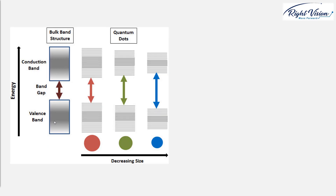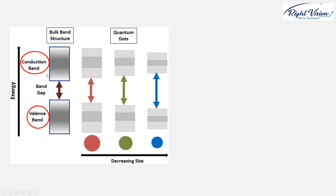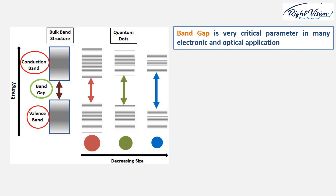As this figure shows, in bulk semiconductor structures two important bands are the valence band and the conduction band. The conduction band is the lowest energy band that is empty, and there is a gap between these two called the band gap. The band gap is a very critical parameter in many electronic and optical applications, and there is tons of research to tune the band gap value.